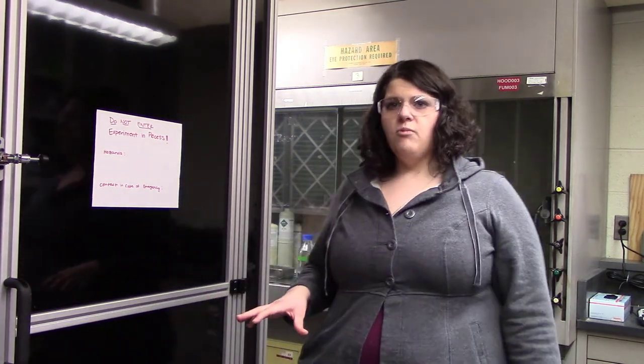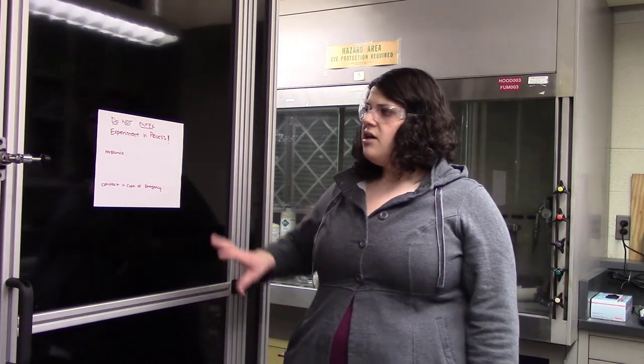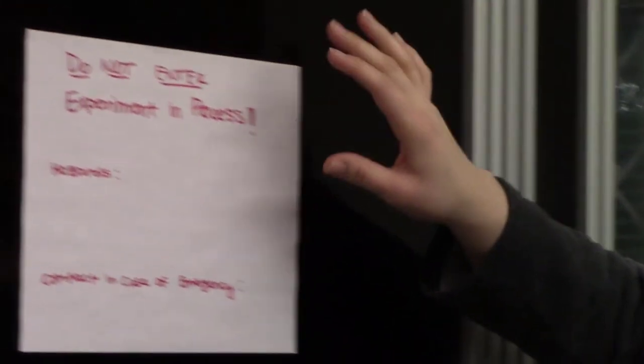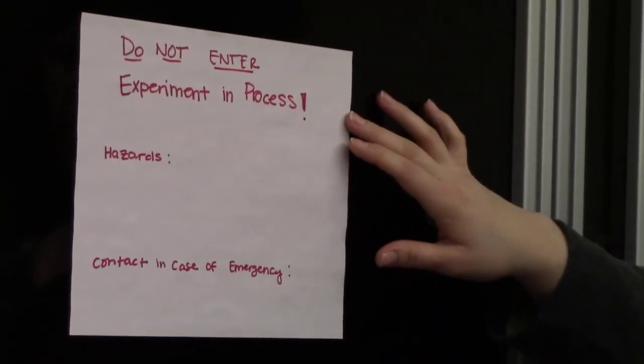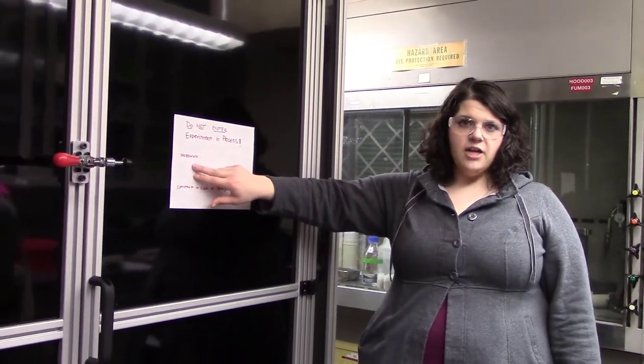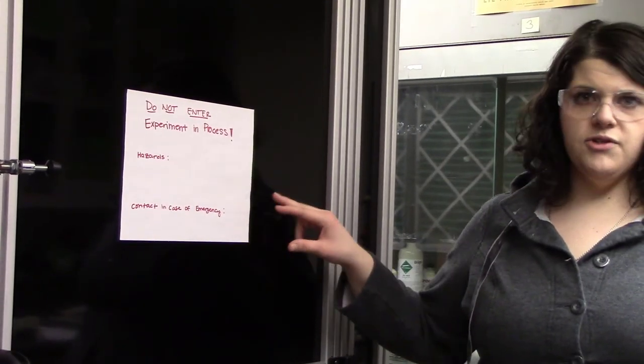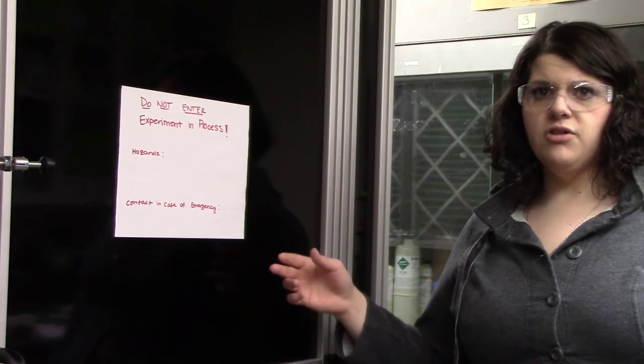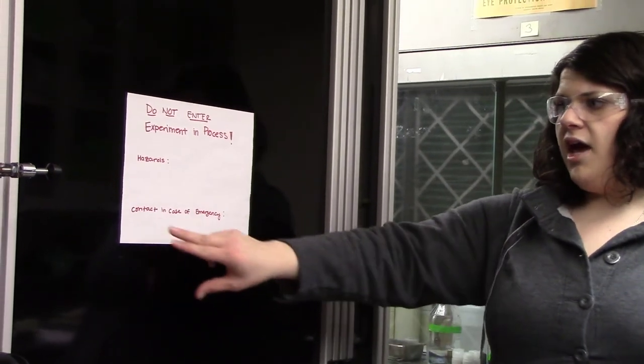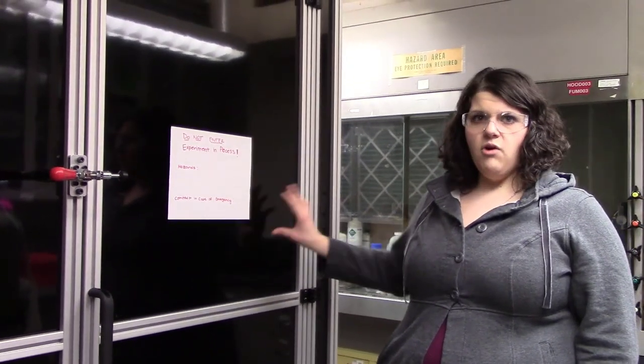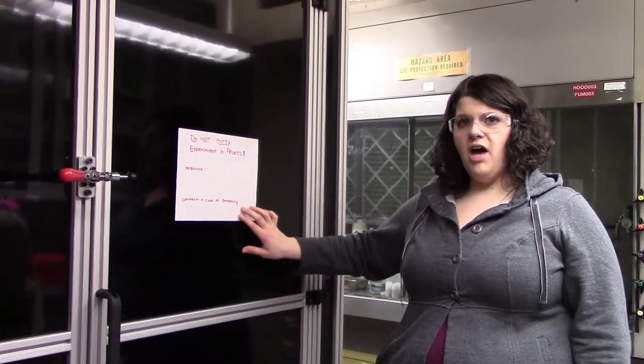Ways that we can keep other people safe that might not be working on the same project as us are we post signs on the door which tell people not to enter and also that there's an experiment going on. If there was an experiment actually going on, we would list our hazards that are inside the chamber, so what chemicals are we using, is there a shock hazard, is there a trip hazard, things like that. And then in case of an emergency, so if there was a chemical spill or a fire or somebody felt like something wasn't going right inside the chamber, they would have a contact number to get a hold of one of us.